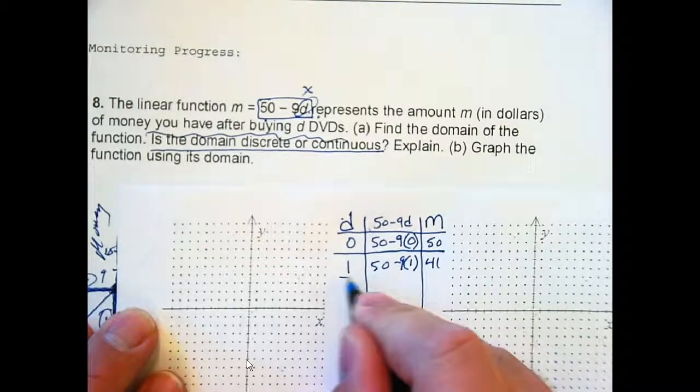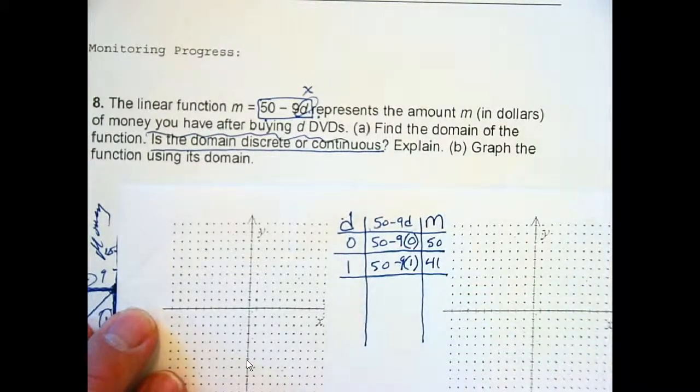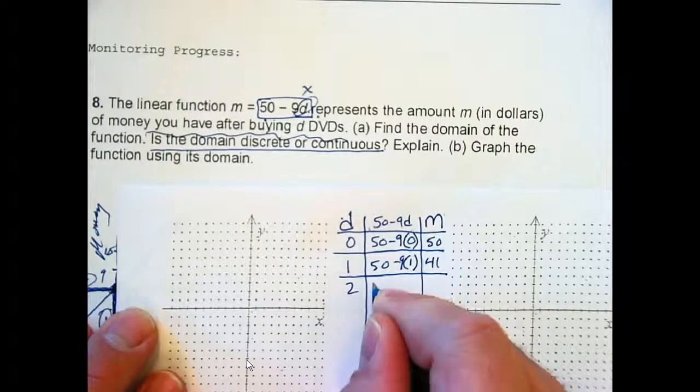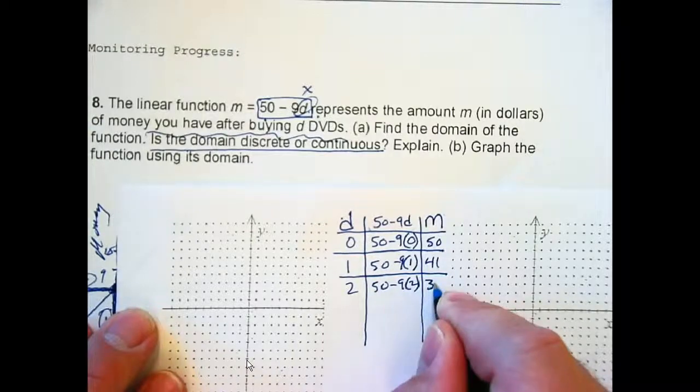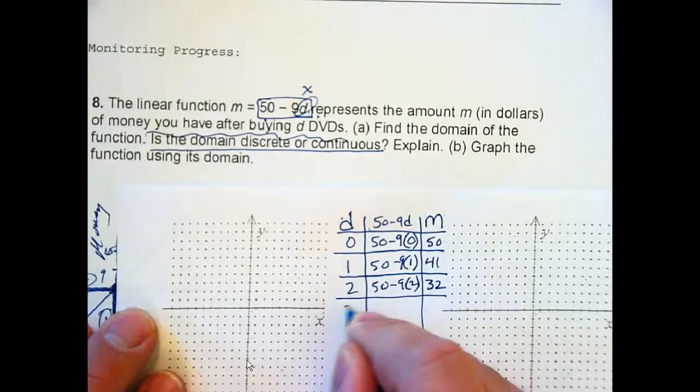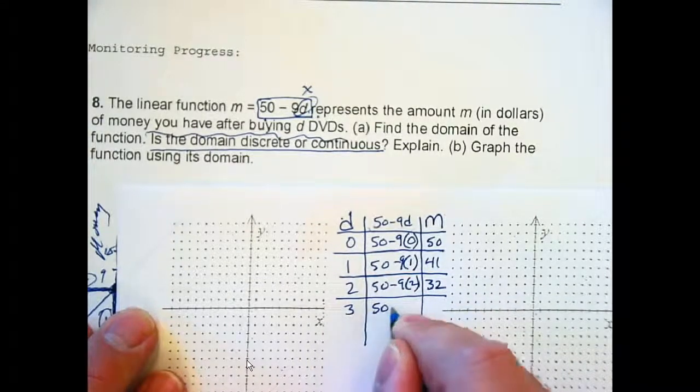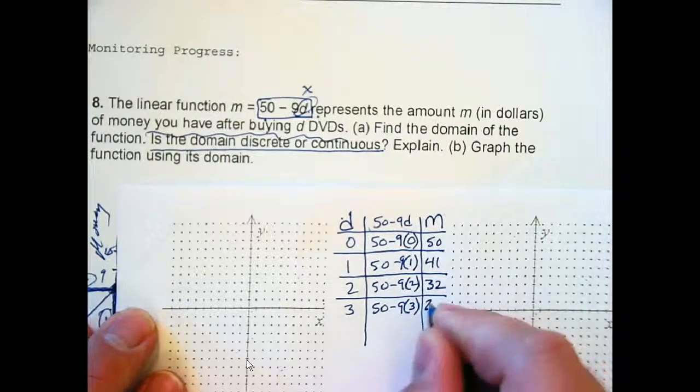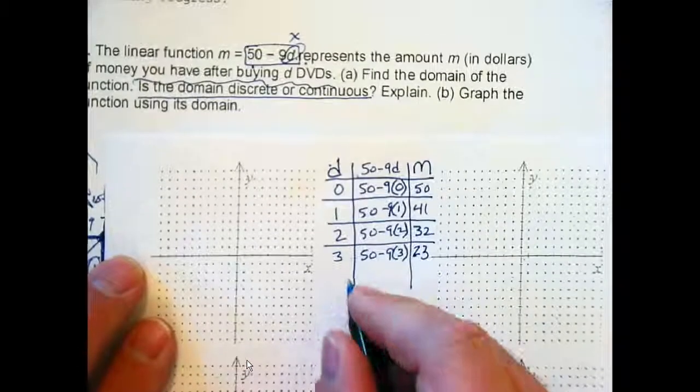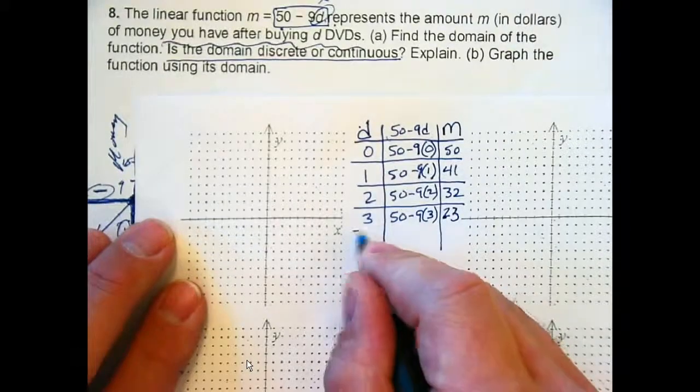If you buy one, how much do you have? 41. You have 41. Right? It costs $9. So, you can only buy a certain number of DVDs. Can you buy two? Yeah? You're now down to? 32. Can you buy three? Yeah. You're now down to? 23.